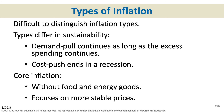Core inflation is measured excluding food and energy prices. Food and energy costs are very volatile — fluctuating with OPEC decisions or weather affecting food supply. Removing those two sectors when calculating the CPI gives a more stable reflection of what's actually happening in the broader economy.